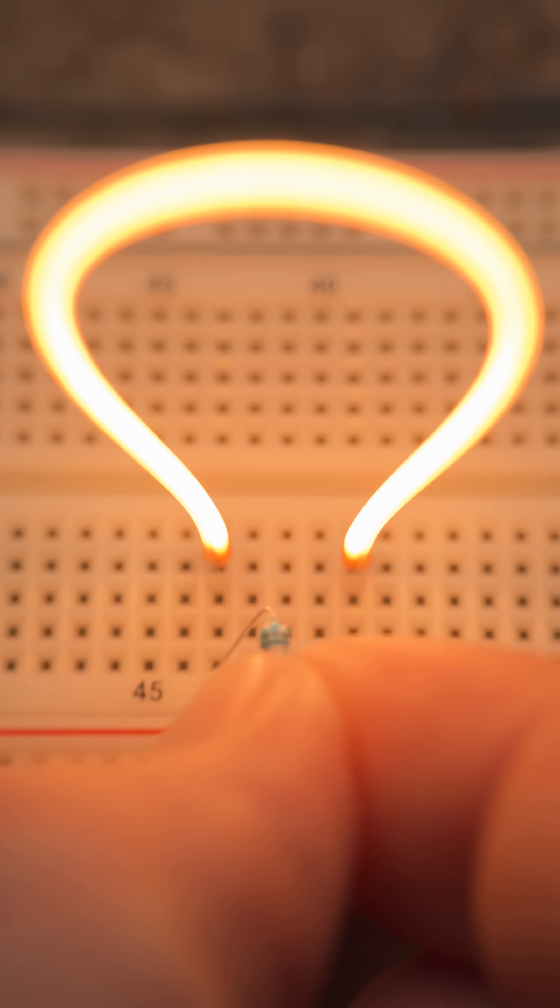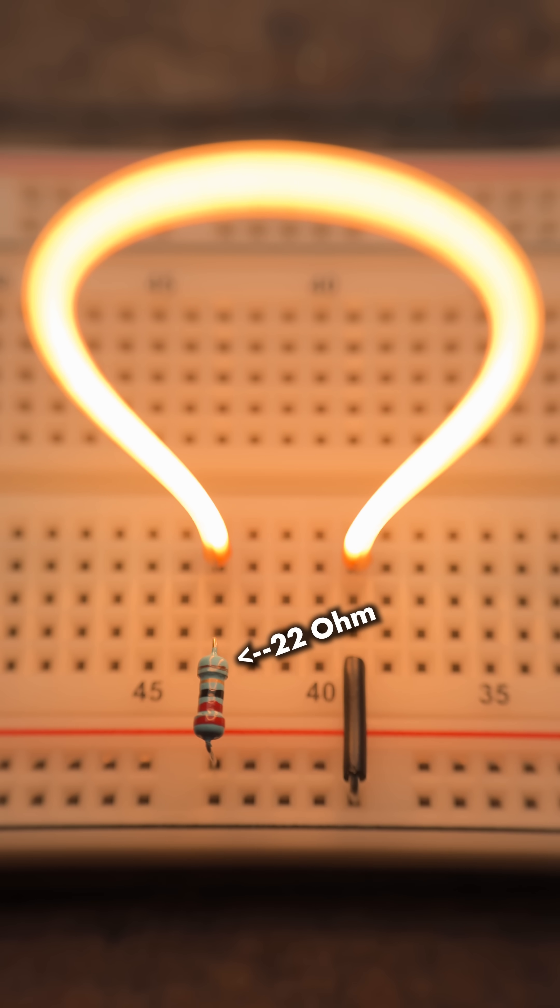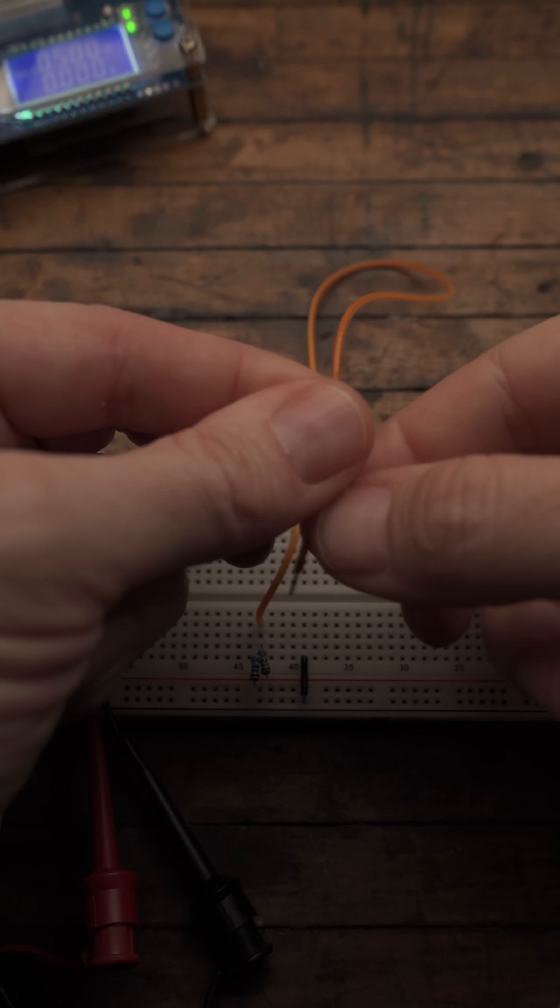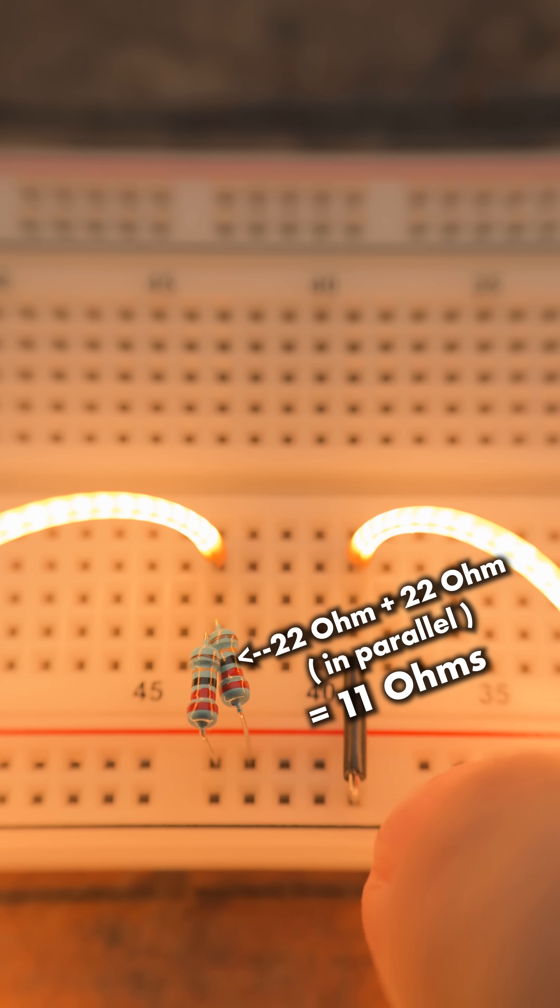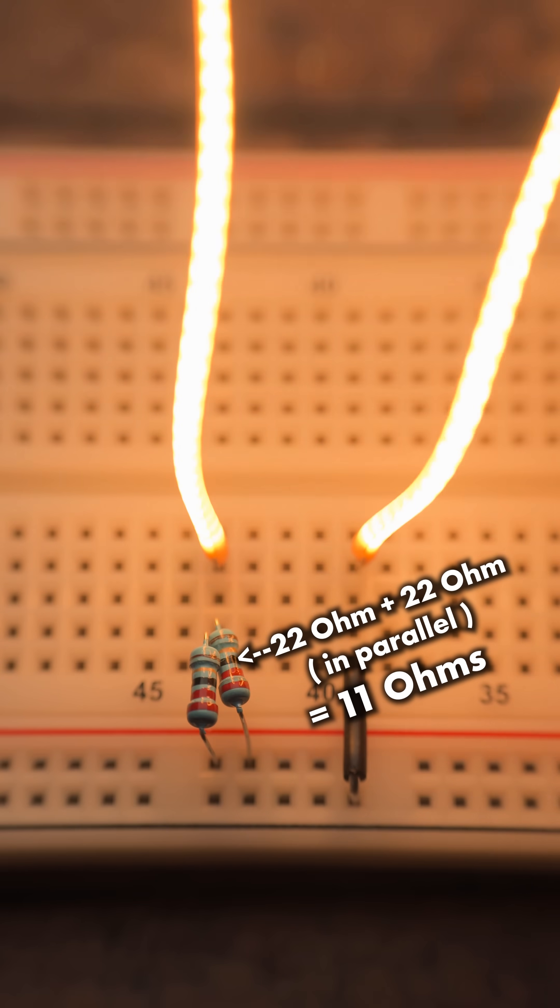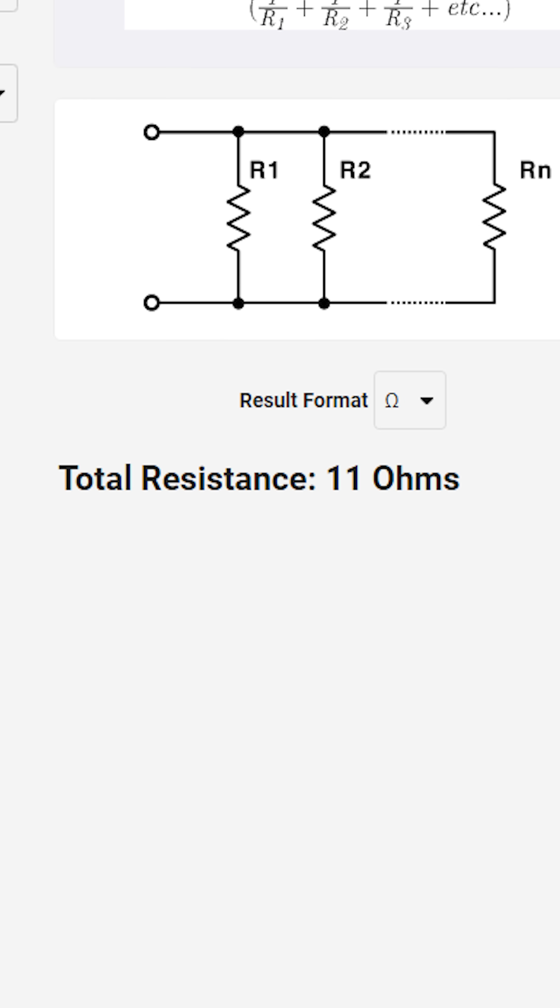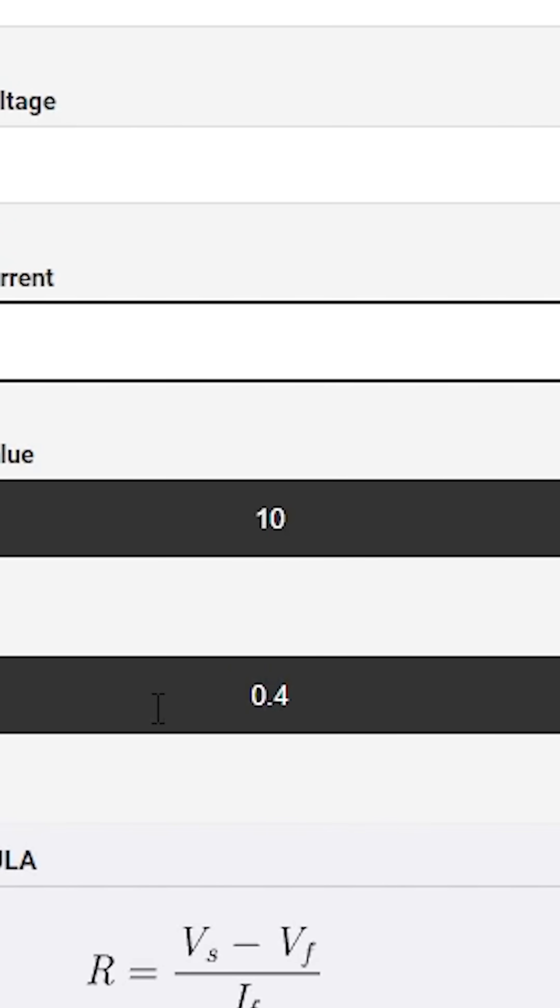At 5 volts, I recommend using a 22 ohm resistor for any length up to 120 millimeters. However, longer versions need more current, so I recommend two 22 ohm resistors in parallel. This reduces the resistance and doubles the current capacity, keeping your resistors cool.